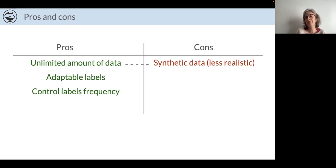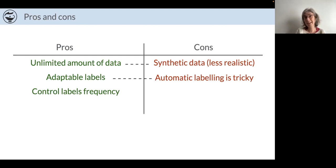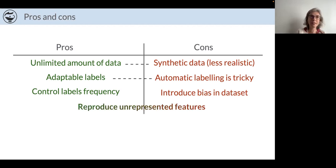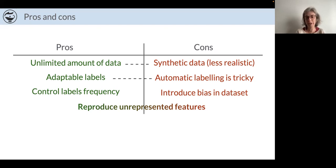Of course there are cons. The data are less realistic than real data. Automatic labeling, even if convenient, is a very tricky step to perform. The generation process can introduce biases in the dataset. And there is also a feature that is half pro and half con: when you create your generator, you always forget some features — but when you spot those omissions, you can reproduce them, generate a new dataset, and train again.